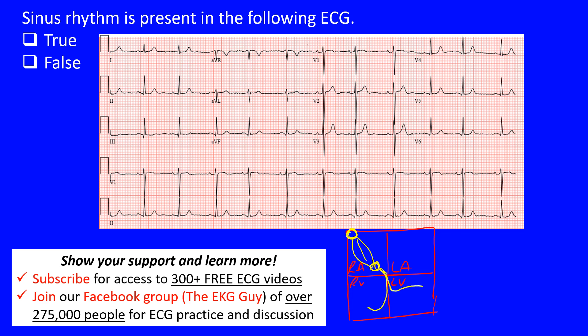When we ask 'is sinus rhythm present,' we're simply asking whether the rhythm is originating from the sinus node — also called the sinoatrial node. Note that the sinus node is located in the right atrium.